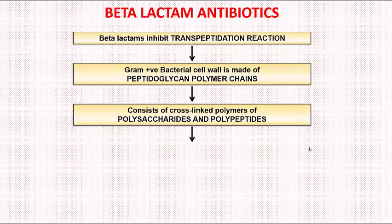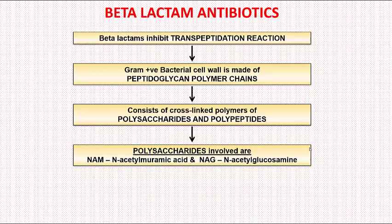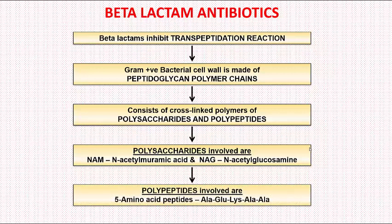The polysaccharides involved are NAM — N-acetyl muramic acid — and NAG — N-acetyl glucosamine. We can remember this as NAM, NAG. The polypeptides involved are 5-amino acid peptides: A-G-L-A-A, that is alanine, glutamic acid, lysine, alanine, alanine.